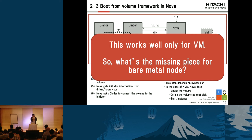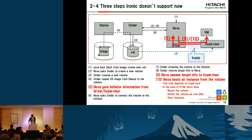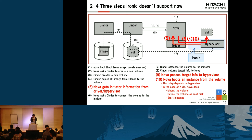This works well only for VMs. So what's the missing piece for bare metal nodes? The missing pieces are steps 5, 9, and 10. Step 5 is getting initiator information from the hypervisor. Step 9 is passing the target information to the hypervisor. And step 10 is configuring the hypervisor or bare metal node to boot from that volume.